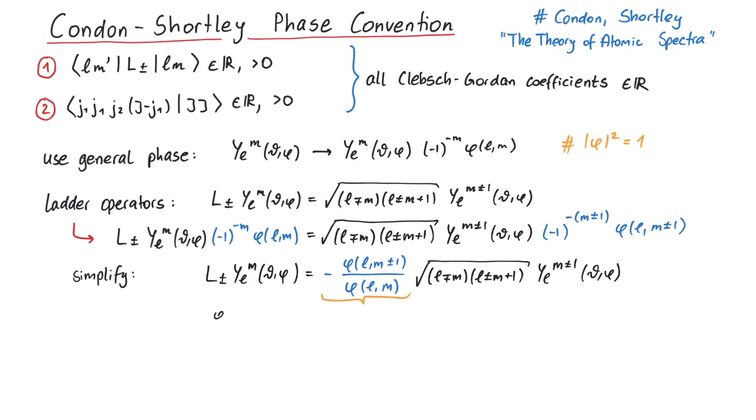Now since we can choose phi any way we want, as long as the absolute value of phi squared is plus one, we can investigate several possibilities. But as you can see, if we choose the simple minus one to the power of m, then the coefficient in front of the square root is guaranteed to be plus one.